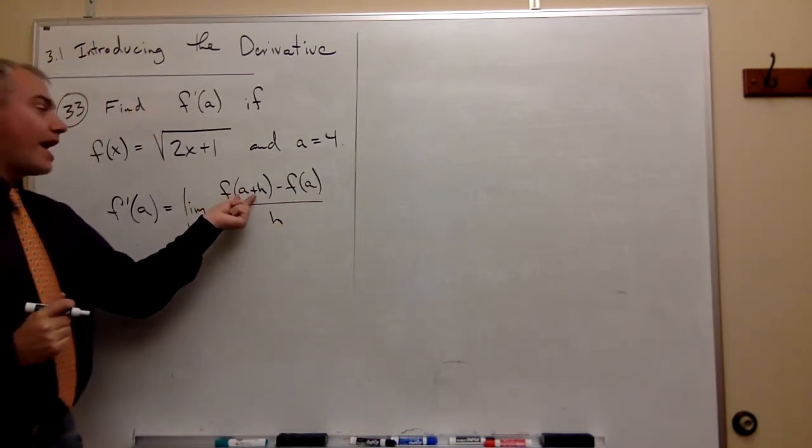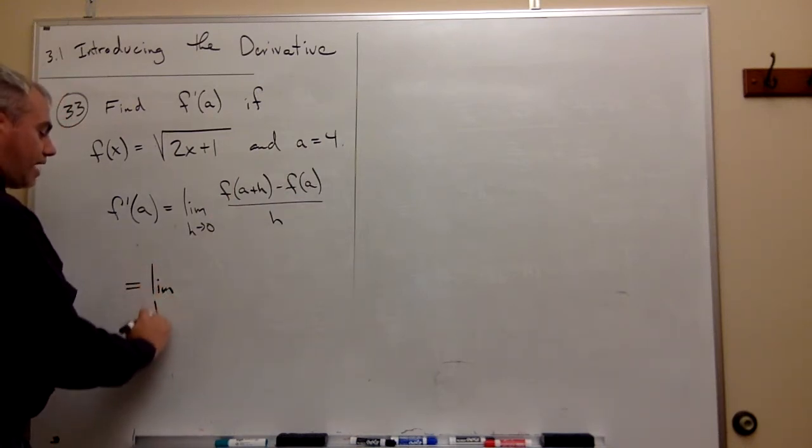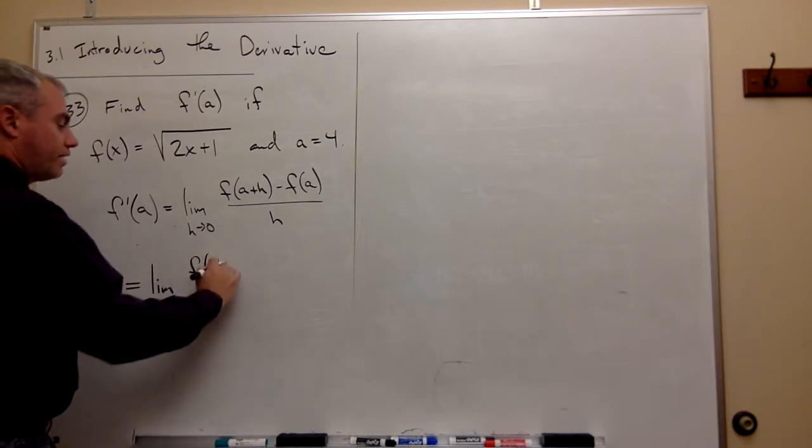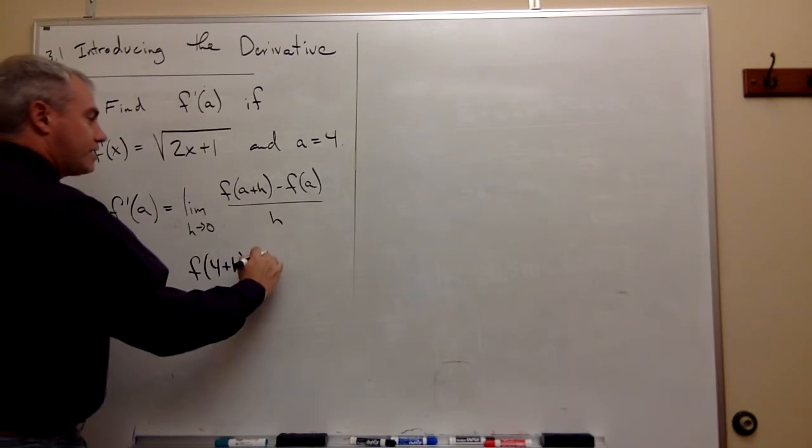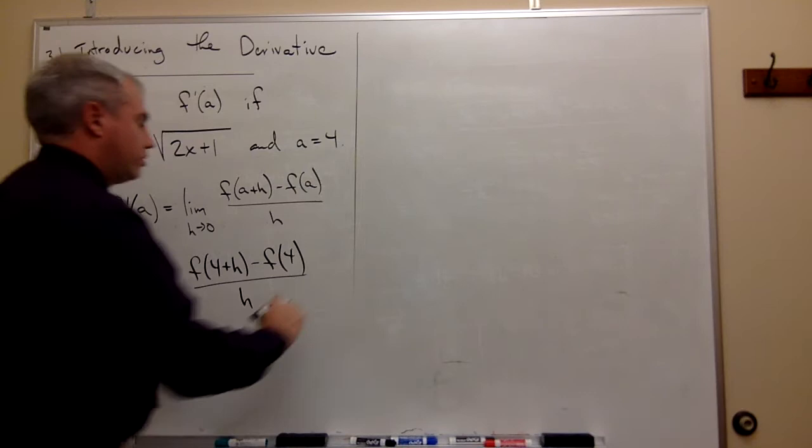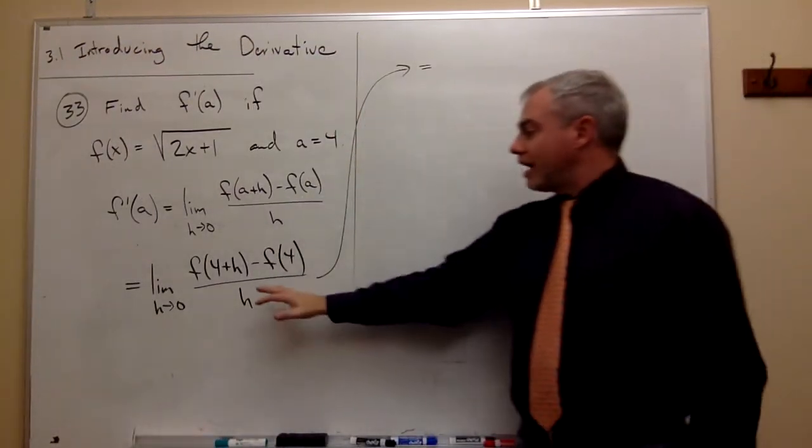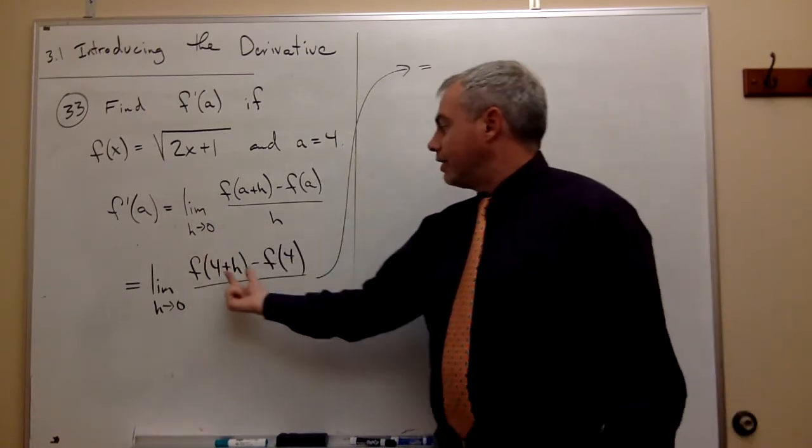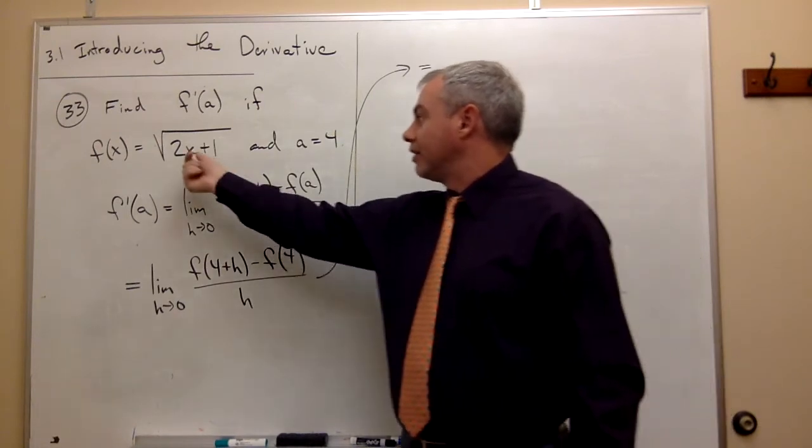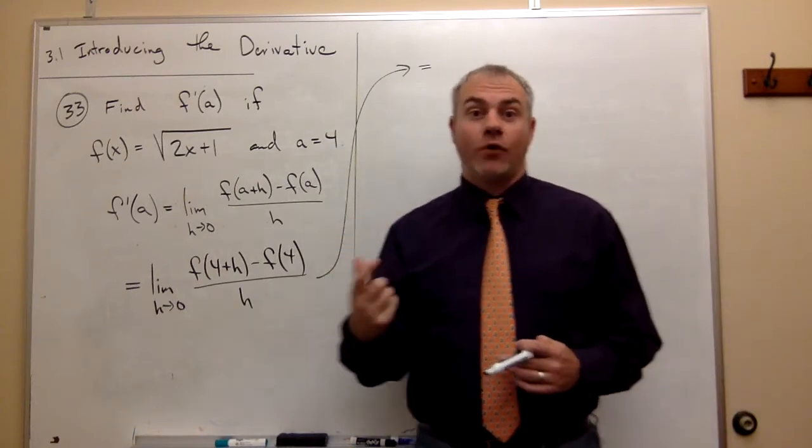Okay, we know what a is. a is 4. So I could rewrite this. This is the limit as h goes to 0 of f of 4 plus h minus f of 4 all over h. Okay, so now that we've got this all set up, now we need to plug 4 plus h in for x and we need to plug 4 in for x to get my f of 4 plus h to get my f of 4.